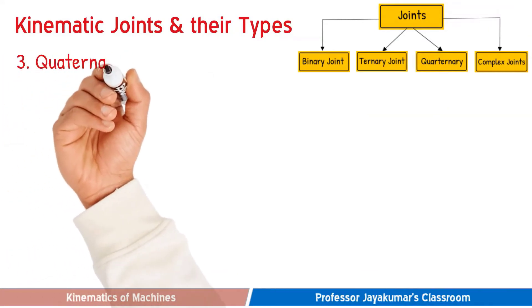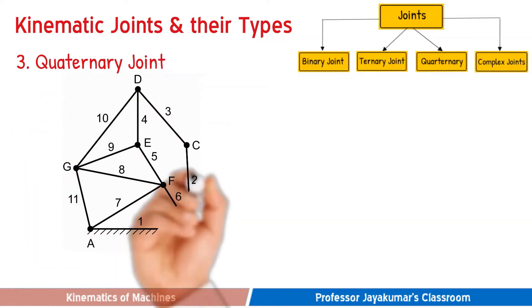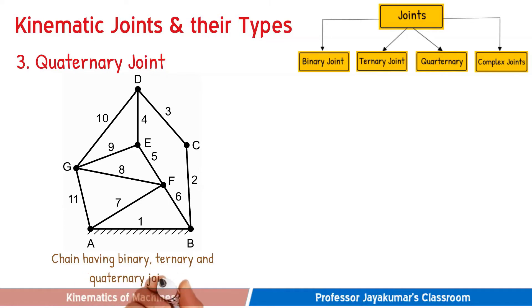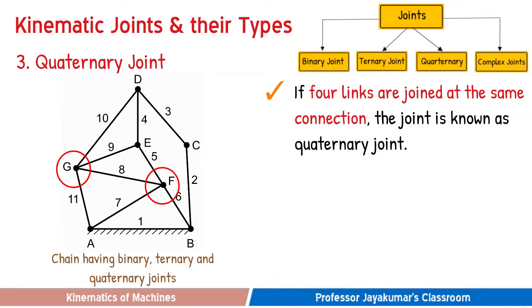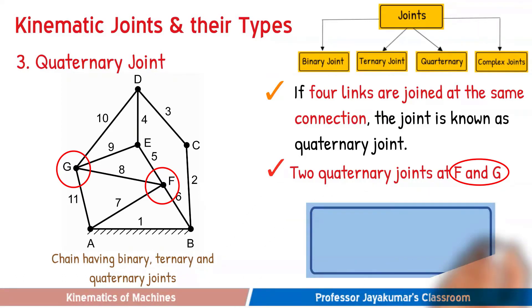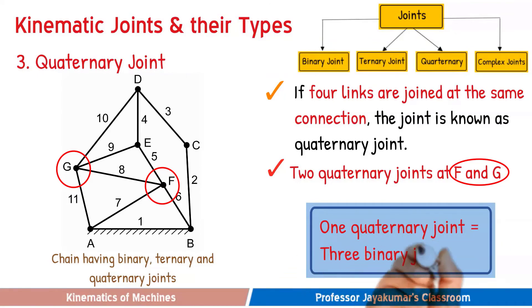The third type is a quaternary joint. As we could see in the eleven link chain shown, we have two quaternary joints at points F and G. For example, at point F we have four links—links 5, 6, 7 and 8—joined at the same connection. So that point F can be called a quaternary joint. It can be proved that one quaternary joint is equivalent to three binary joints, which would be useful while solving numerical problems.